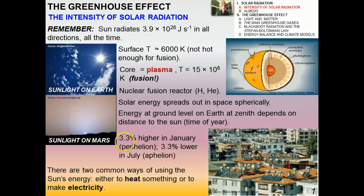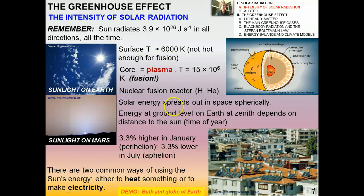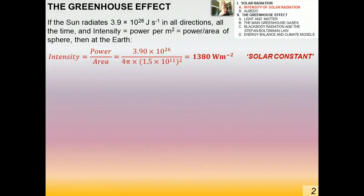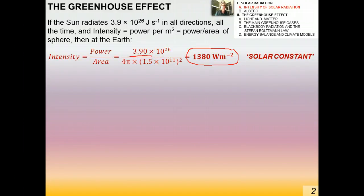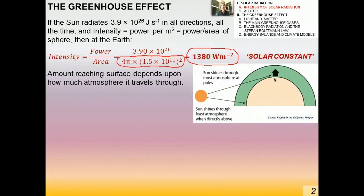There are two common ways of using the Sun's energy: heating something directly, or making electricity using solar cells on rooftops. Solar energy is an up-and-coming clean energy source. If the Sun radiates 3.9 times 10 to the 26 watts in all directions, then the intensity — power per square meter — at the Earth is about 1,380 watts per square meter, calculated using the area of the spherical shell whose radius is the average Earth-Sun distance. The amount reaching Earth's surface also depends on how much atmosphere the radiation has to travel through.